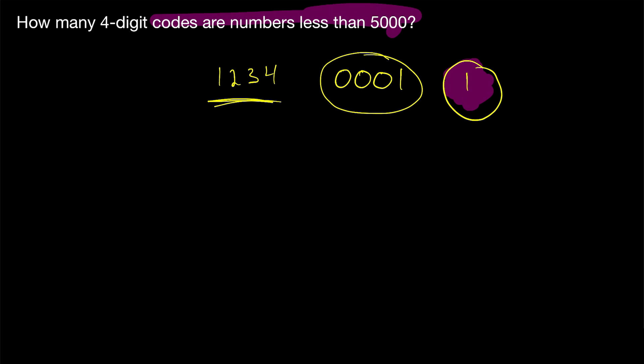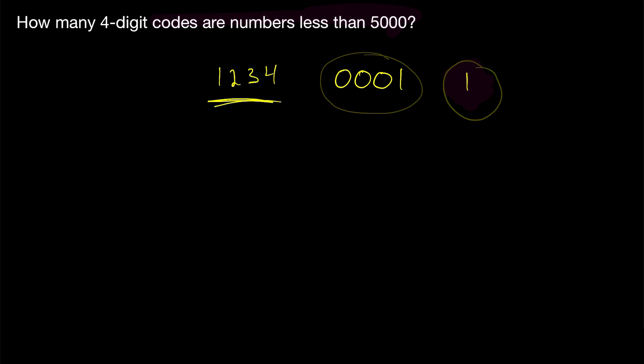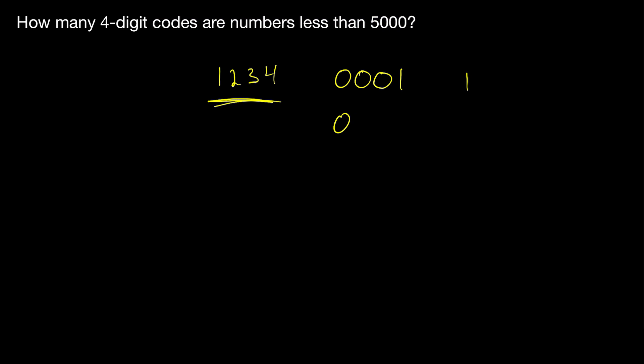So does this four-digit code, which represents a one-digit number less than 5,000, count? Should we be counting it? Let's go over both possibilities — if we do count it or if we don't. Some other examples of numbers like that would be 0, 1, 0, 2 — a four-digit code that represents a three-digit number less than 5,000. Do we count it? Let's see how it works out either way.